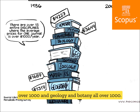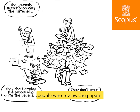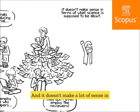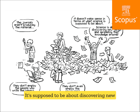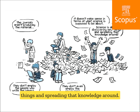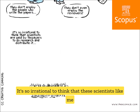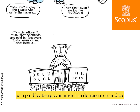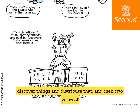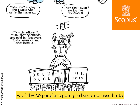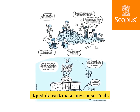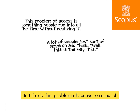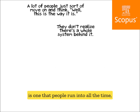There's a journal called Tetrahedron that's forty thousand dollars. The journals aren't producing the material; they don't employ the people who write the papers or even the people who review the papers. It doesn't make a lot of sense in terms of what science is supposed to be about — discovering new things and spreading that knowledge. It's irrational that scientists paid by the government to do research have their work locked away.